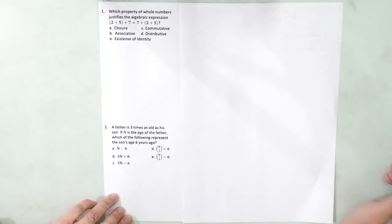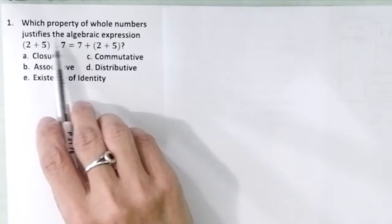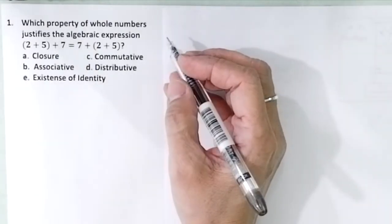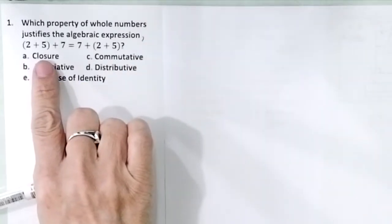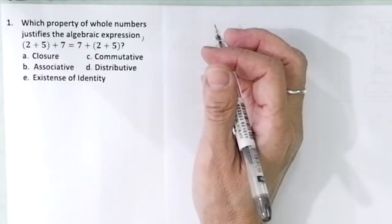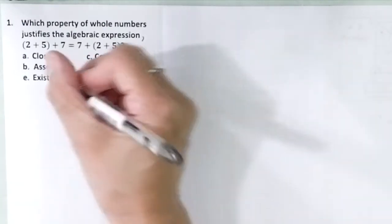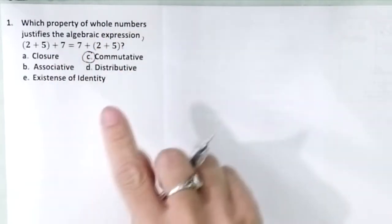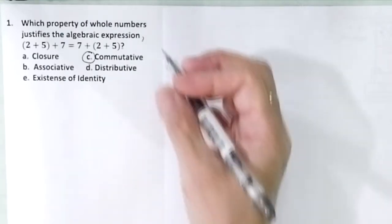Problem number 1. Which property of whole numbers justifies the algebraic expression, parenthesis 2 plus 5, parenthesis plus 7 equals 7 plus 2 plus 5? The correct answer is not associative but commutative. Many students make a mistake here.